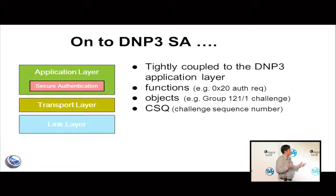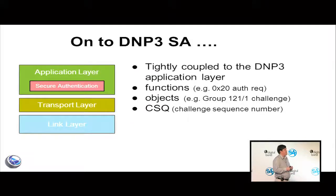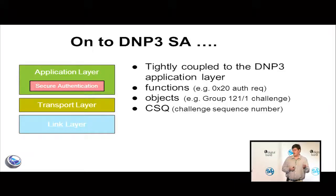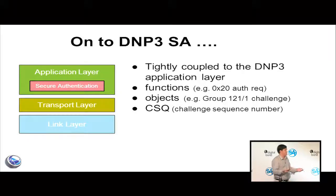I want to compare and contrast that with something on the completely other end of the spectrum — DNP3 Secure Authentication. It's not protocol agnostic; the security is embedded into a protocol we've had around for 20 years. They've chosen to add authentication in a very different way. Instead of a lower abstract layer, they've repurposed constructs that already exist in DNP3 — functions and objects. They've also added extra sequence numbers to prevent replay attacks. But it's definitely not another layer — it's very tightly coupled.